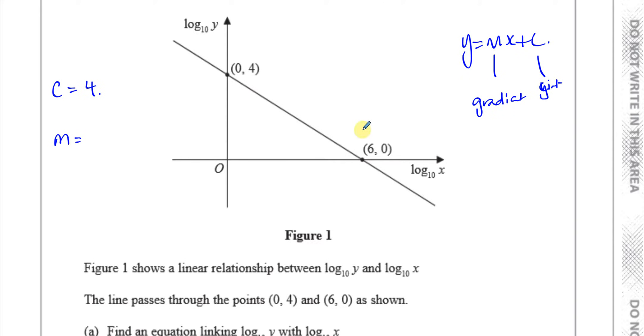which is 4 minus 0 over the change in x, which is 0 minus 6, which is going to be minus 2 over 3. We've got 4 over minus 6, which is minus 2 thirds. So I can see that this is of the form y equals minus 2 thirds x plus c.